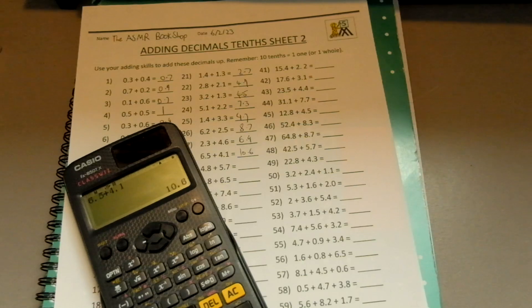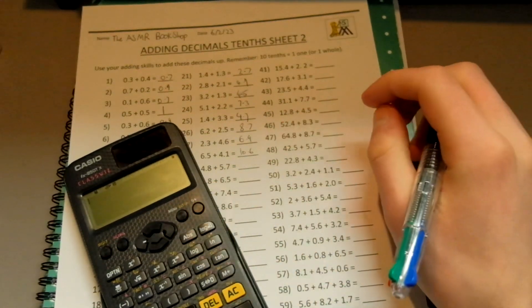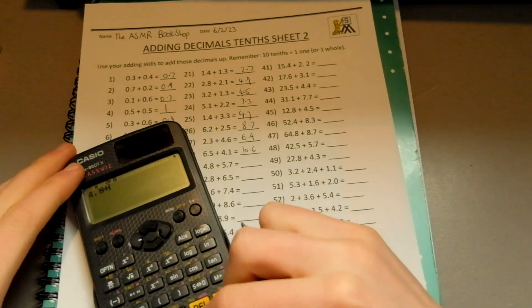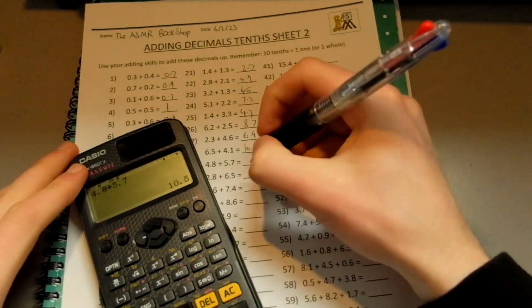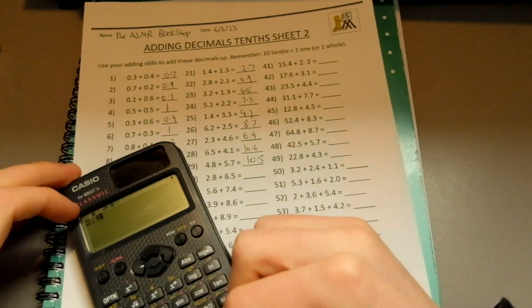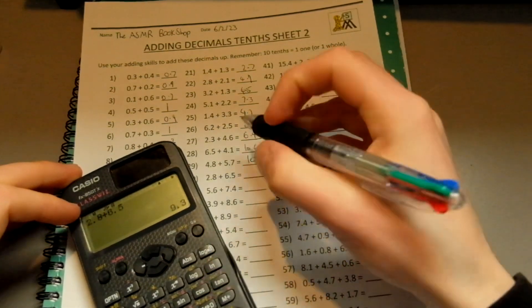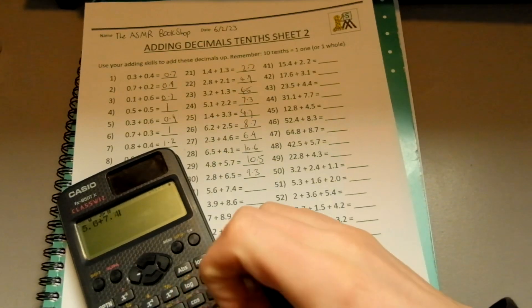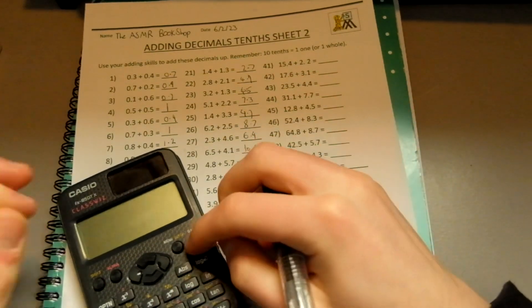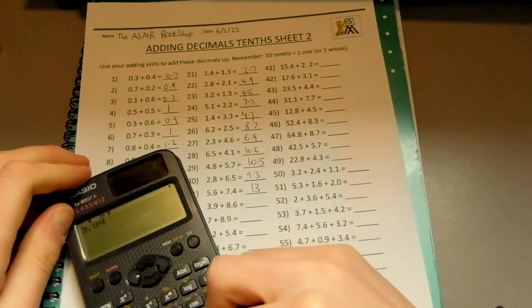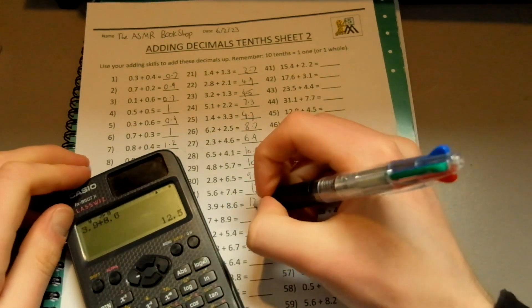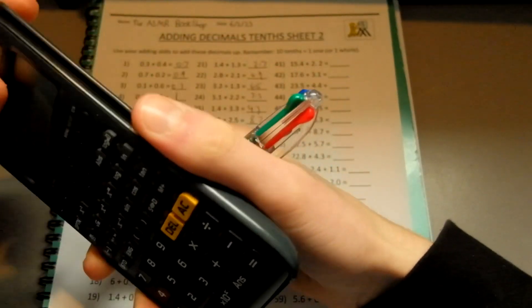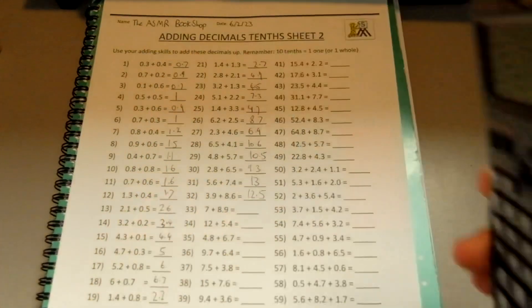10.6. I hope you are enjoying this video. I will be ending it soon. Let's just do a couple more calculations. We've got 4.8 plus 5.7 equals 10.5. Then we've got 2.8 plus 6.5 equals 9.3. Then we've got 5.6 plus 7.4 equals 13. Unlucky 13. Let's not end on that because there's a bad number. 3.9 plus 8.6 equals 12.5. That's a better number there. We'll end on 12.5. So, we've got 32 questions done. I think we've done okay. I think we've passed the test. We've got more than half marks anyway.